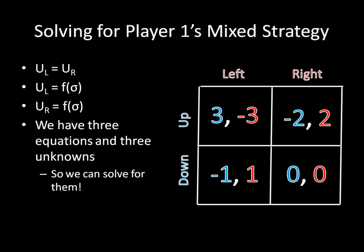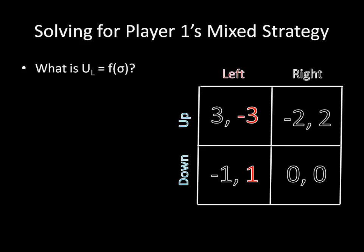Let's begin by solving for player 1's mixed strategy. For player 1 to be willing to mix, some sigma has to exist such that player 2's utility for playing left equals her utility for playing right. We've also established that each of these utilities is a function of sigma. Notice that we have three unknowns here: u of l, u of r, and sigma. We also have three equations. If you've taken much algebra, then you should know that we can solve for each of these things as a result. The only obstacle standing in our way is fully writing out u of l and u of r as a function of sigma.